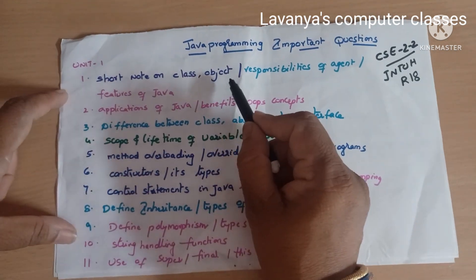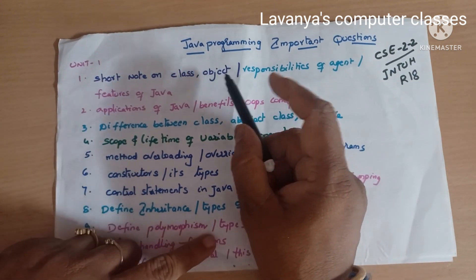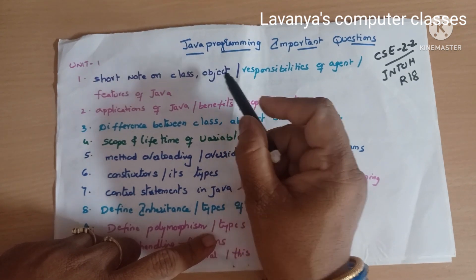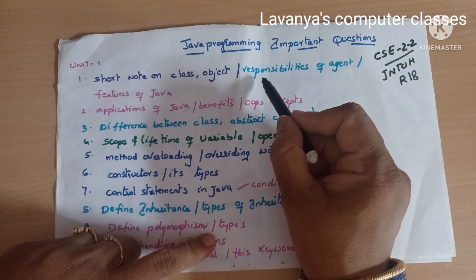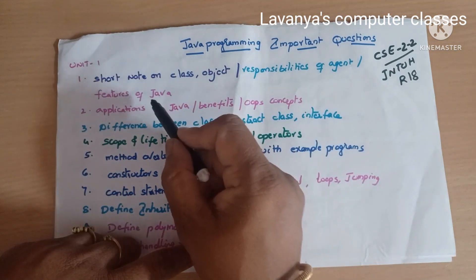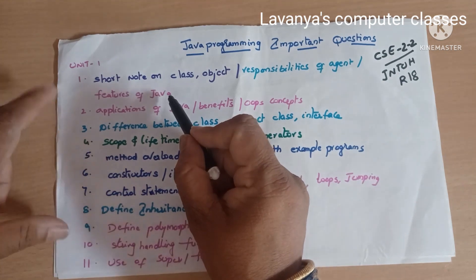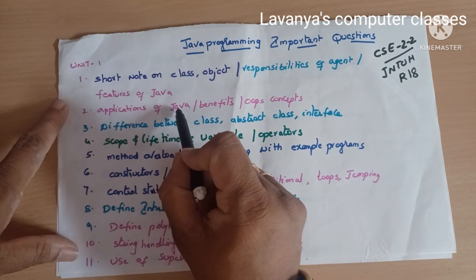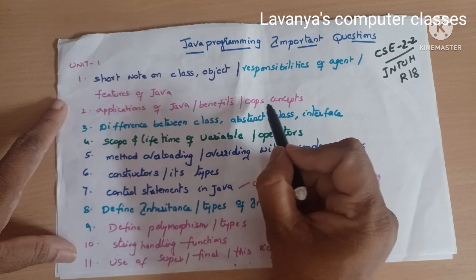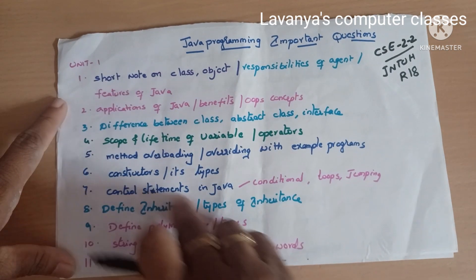Java programming is an OOP language, so first we cover what is a class, what is an object, and related concepts. Very very important questions are: features of Java, applications of Java, benefits of Java, and concepts of OOP. These are compulsory questions — one question is definitely coming from this area.